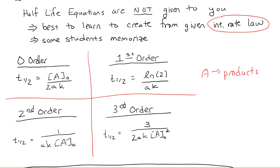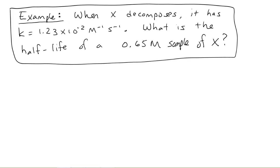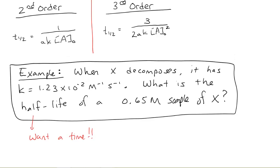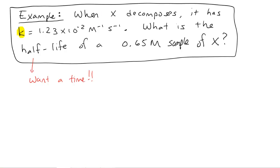Let's put this to use with a problem you might see on an exam. When some substance X decomposes, it has a rate constant that's given to you, and you're asked: what's the half-life of a 0.65 molar sample? First, they're asking for a half-life, so they want a time — that's key. Second, we need to know the order to use the correct half-life equation. We're given a clue: K has units of molarity to the minus one, seconds to the minus one, which are the units for a second-order reaction.